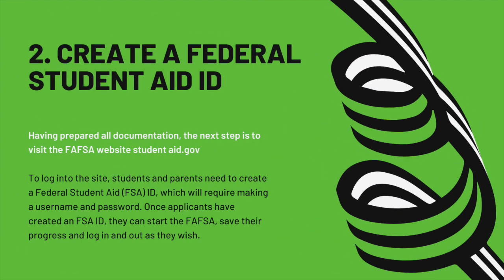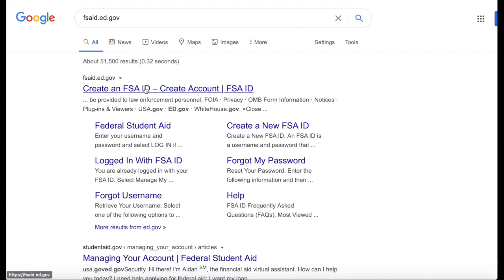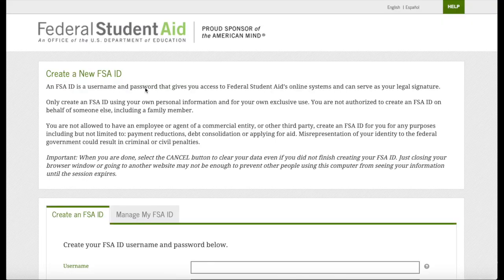Step two: create a federal student aid ID. Now that you have prepared all your documents, the next step is to visit the FAFSA website. To log into the site, students and parents need to create a federal student aid ID, which requires making a username and a password. Once applicants have created this, they can log into their FAFSA and log in and out as they wish, all while saving their progress.